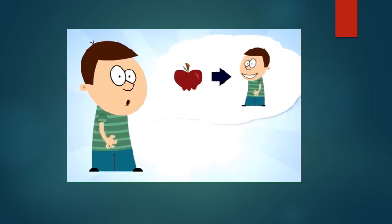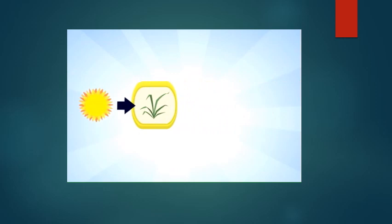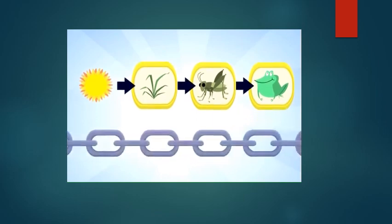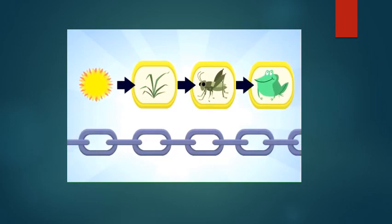Food! For instance, grass gets its energy from the sun and then a grasshopper eats the grass to get its energy. Then a frog eats the grasshopper. The arrows show where the energy came from and where it's going. That's a food chain. And look! See how similar it is to an actual chain?